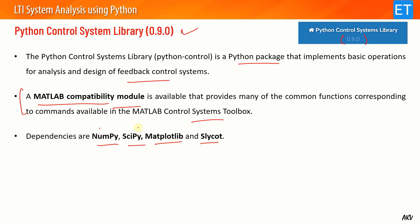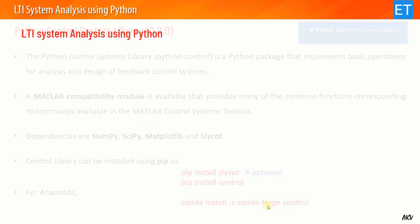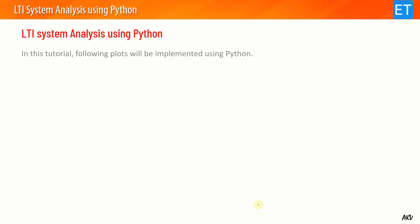In this video I will use only the MATLAB compatibility module so that both MATLAB and Python users can understand easily since the commands are similar. Its dependencies are NumPy, SciPy, and Matplotlib — these three are sufficient for almost all applications. Slycot is needed for some advanced applications and is optional. To install using pip: use 'pip install control'. For Anaconda, use the command 'conda install -c conda-forge control' in the Anaconda prompt and everything will be automatically installed.